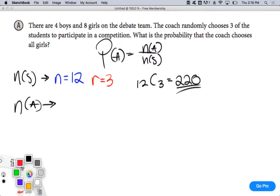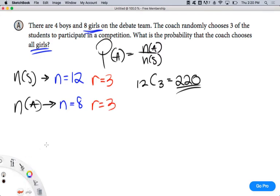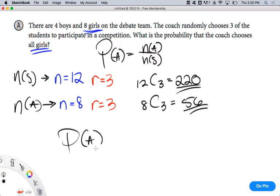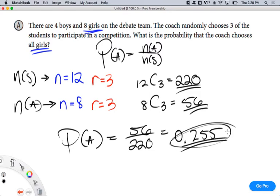220. Now NA. What's N in this case? Eight. Good. Why is it eight? Because it's all girls. You're interested in only choosing girls for the team. R equals three still, because you're still only choosing three. 8C3 is 56. PA then is 56 over 220, which is 0.255. That's my final answer. Does that make sense?